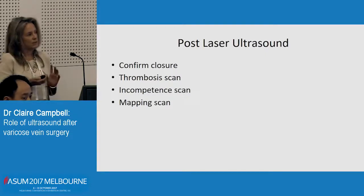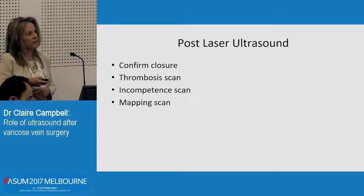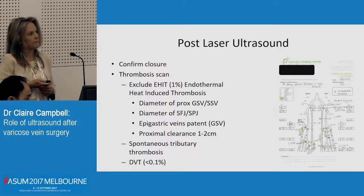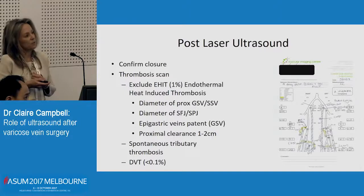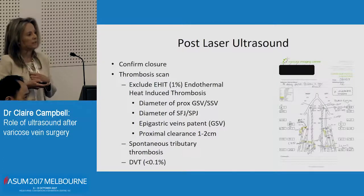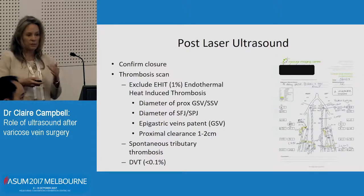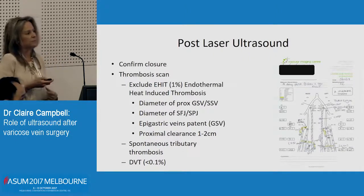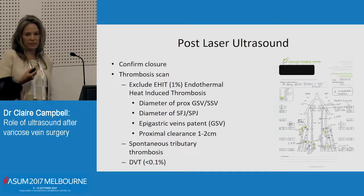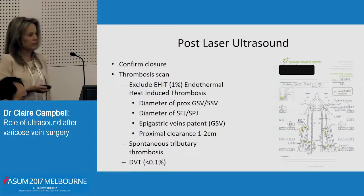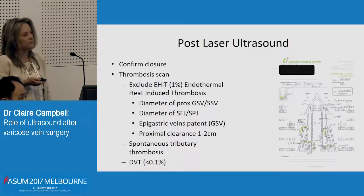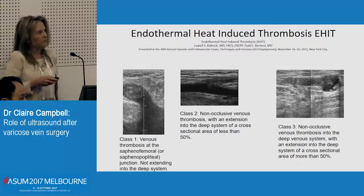Post-laser scan — we confirm closure, we do a clot scan, we do an incompetence scan, and we do a mapping scan. We want to exclude an EHIT — that's thrombus in the proximal untreated segment of the trunk vein. You've really just got to look at the diameter of the proximal vein — you've got to have good before and after diameters. If it's bigger, that could be thrombus, not lasered vein. Looking at the diameter of the junction, you want to make sure the epigastric veins are patent, because if there is proximal thrombus but those veins are patent, it doesn't tend to progress to any problems. You want to know about spontaneous tributary thrombosis because that's a red flag that the patient's pro-thrombotic, which will help determine whether they need Clexane or anticoagulation for their injections.